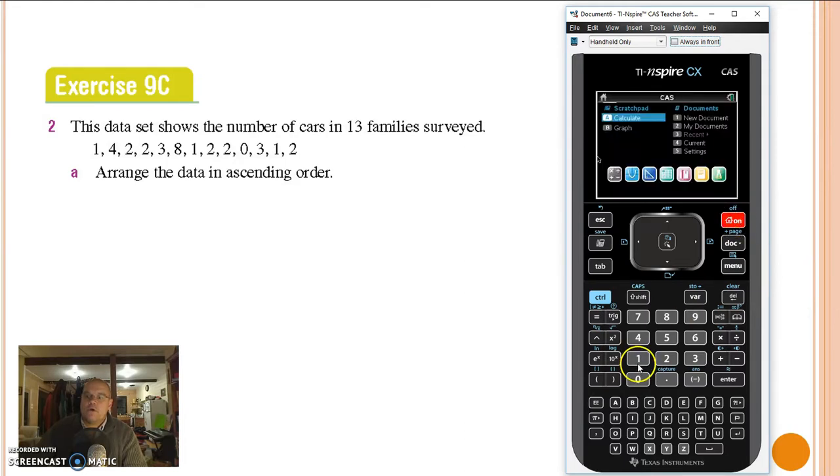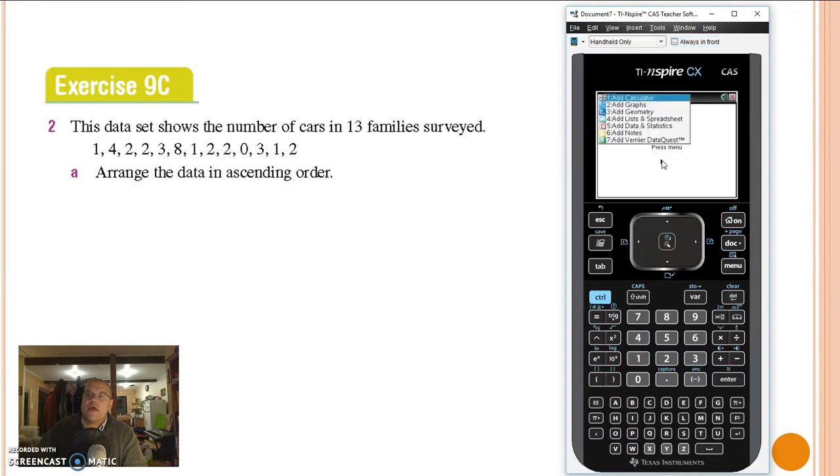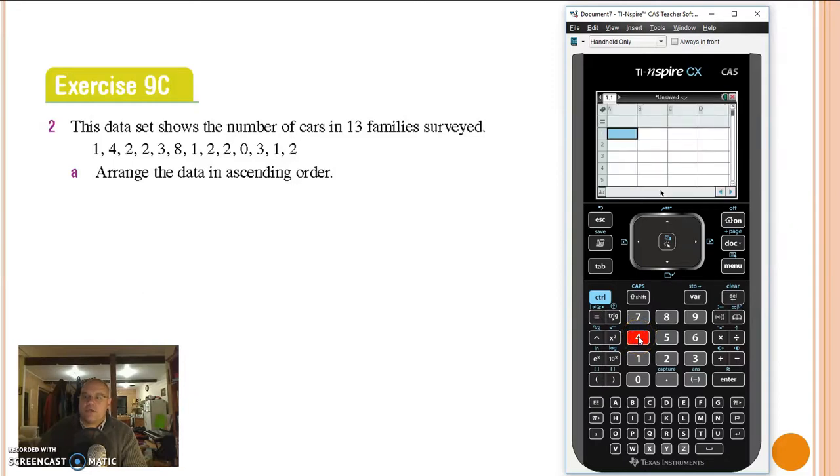As always with our calculator I recommend that we start off with a new document. That's home, one, nothing to save in this particular one and then four lists and spreadsheets and we're ready to go. We can then move it up to the name and we'll call this number. After that in goes the data.